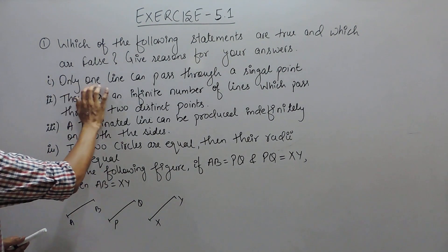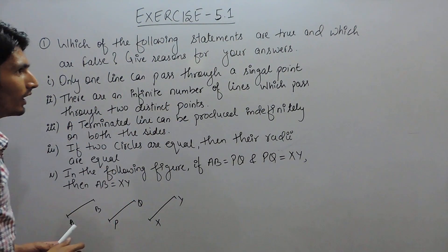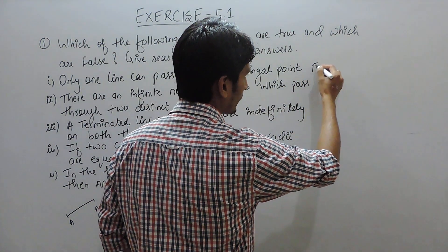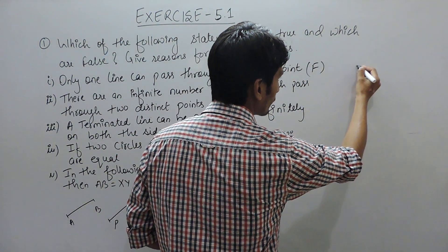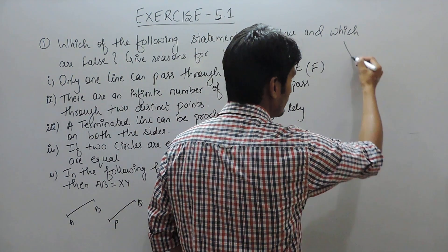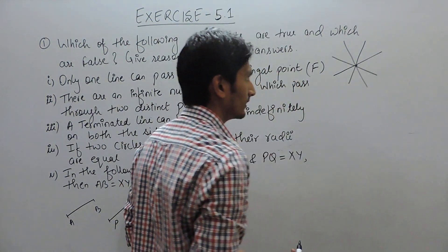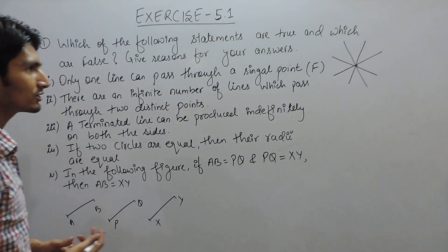First statement is only one line can pass through a single point. This is false because from a single point infinite number of lines can pass. So the first statement is wrong.